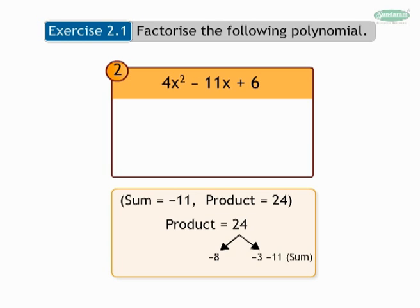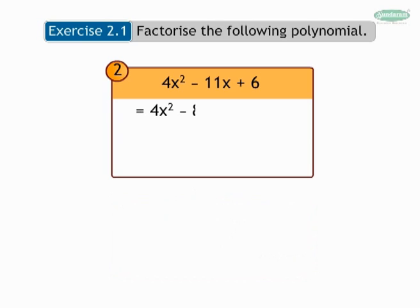So here we get 4x squared minus 8x minus 3x plus 6.